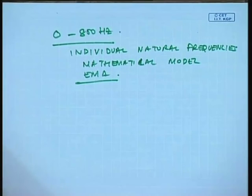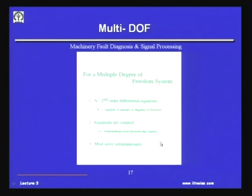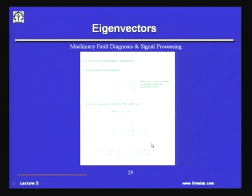To summarize: for a harmonic forcing function, the response is harmonic — the forcing function is sinusoidal or cosinusoidal. The system always responds at its forcing frequency with a certain phase angle related to the forcing function. For a multi-degree-of-freedom system, instead of one differential equation there are n equations (n = number of degrees of freedom), which must be solved simultaneously. In the next class, I will discuss the application of machinery vibrations to multi-degree-of-freedom systems — how vibration gets transmitted to different components, how rotating systems behave under different excitations and unbalanced forces. Thank you.